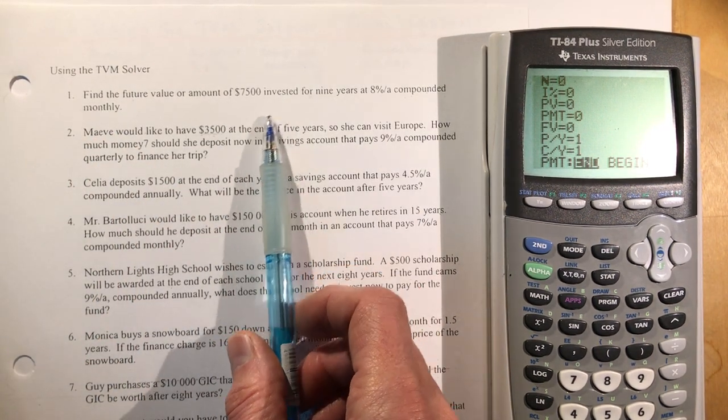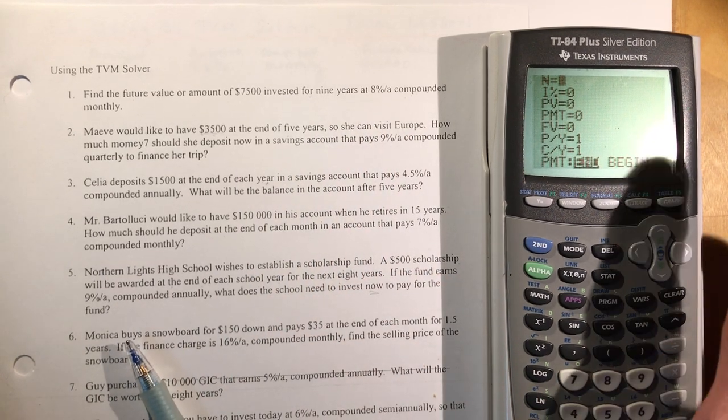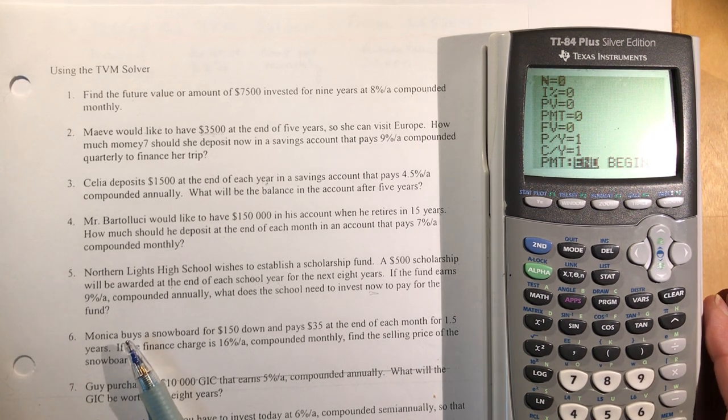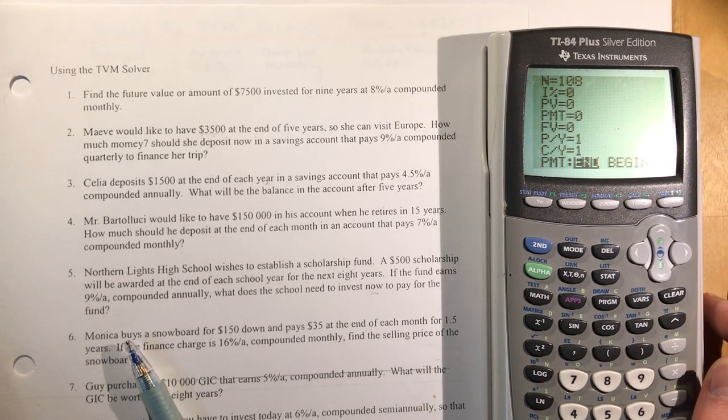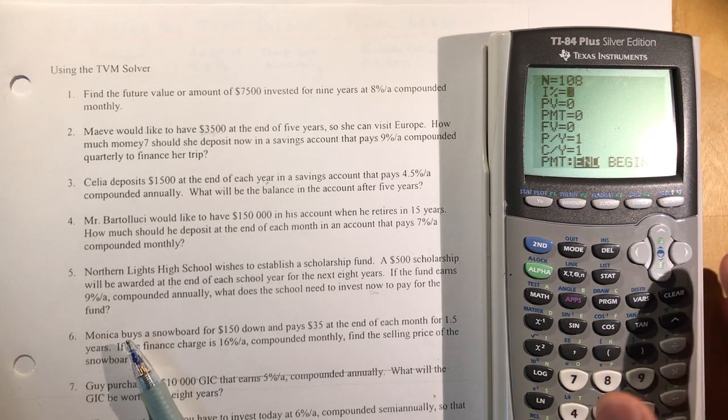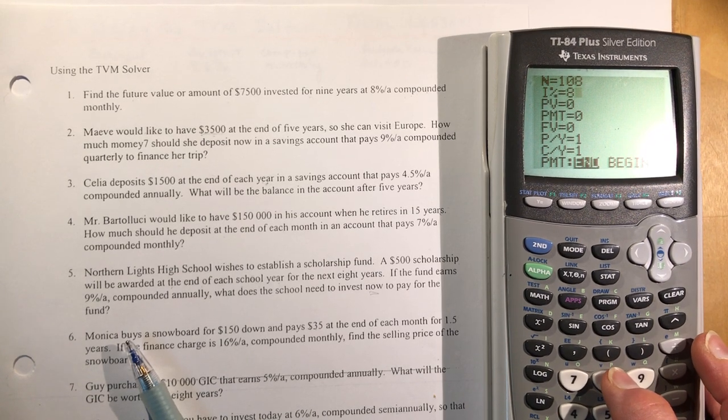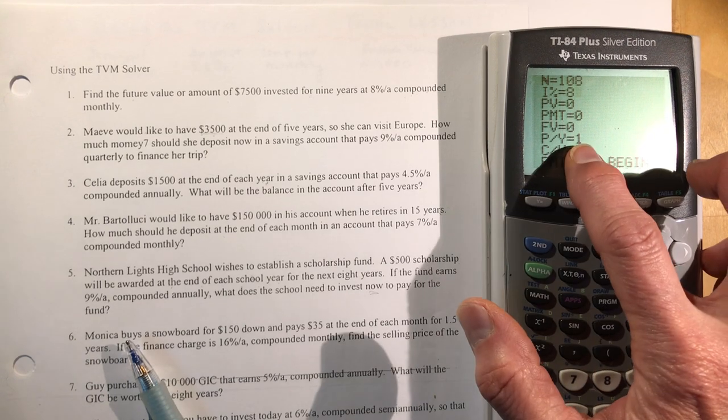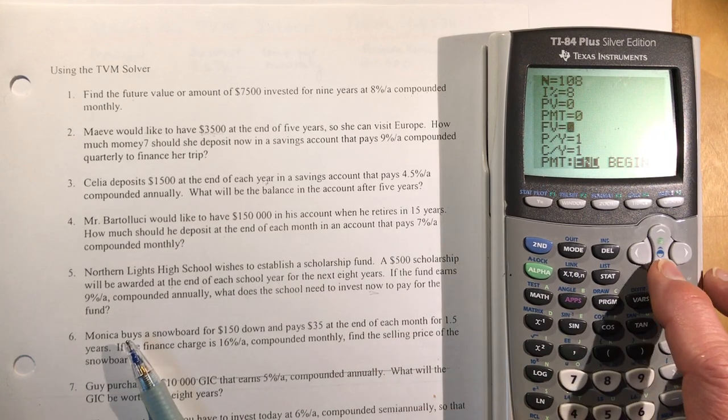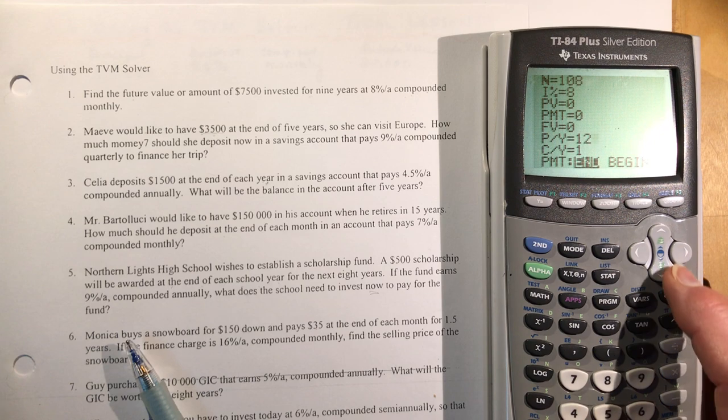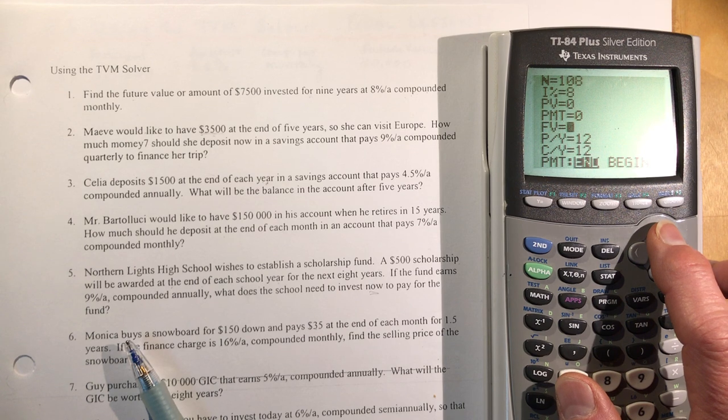Find the future value of $7,500 invested for nine years at 8% per annum compounded monthly. You need to figure out the n value. Nine years monthly is 9 times 12, which equals 108. The interest rate, you just put in as a percentage, so that's 8. It's compounded monthly, so PY and CY need to be 12. If you put 12 in for PY, as soon as you scroll, the conversions per year also goes to 12.